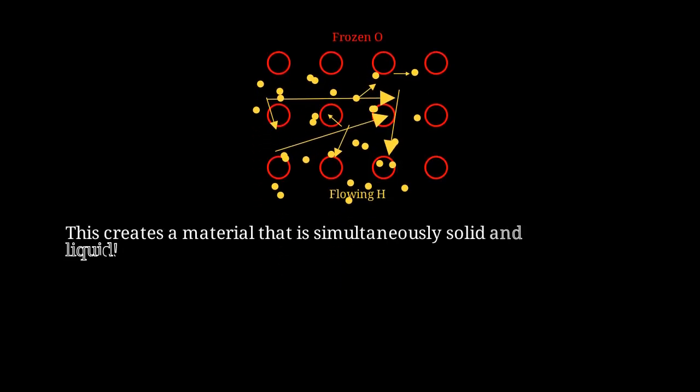This creates a truly bizarre state of matter that is simultaneously solid and liquid, like ice with a liquid interior flowing through it. We can think of it as solid oxygen plus liquid hydrogen equals superionic ice.